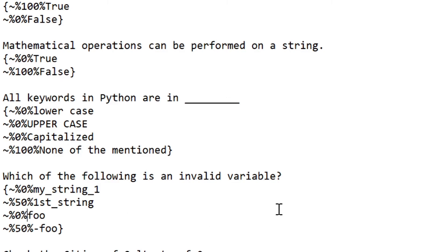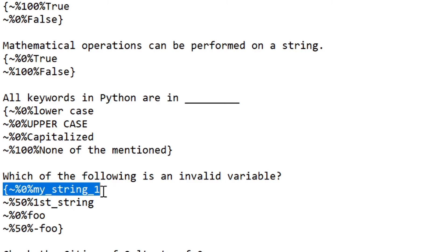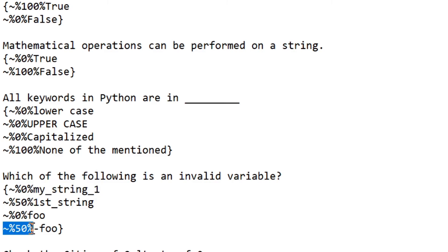Now suppose a question has two right answers. You give 50 percentage to one answer and 50 percentage to the other answer. For example, 'Which of the following is invalid?' — the wrong choice gets none, and the two right choices each get 50 percentage. The participant needs to select both answers to get the full mark; otherwise they get only 50 marks. So these are multiple choice answers for this question.